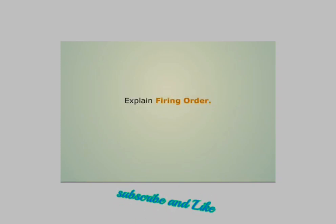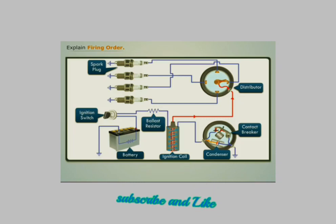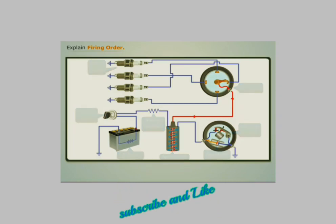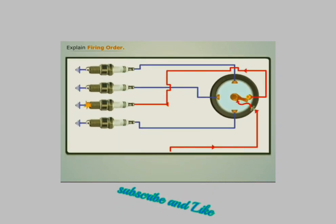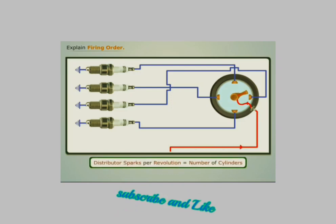Explain firing order. We know that in an ignition system, the distributor passes the spark to each of the spark plug leads one at a time. In one revolution, the number of sparks produced by the distributor equals the number of cylinders in the engine. Let's consider a four-cylinder engine.